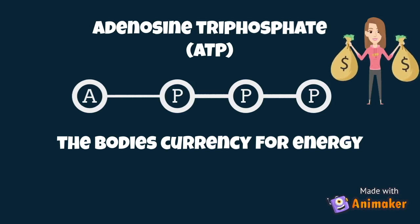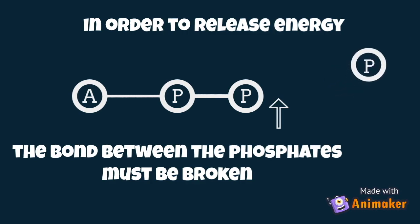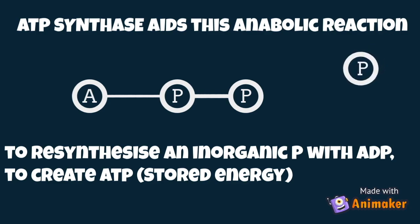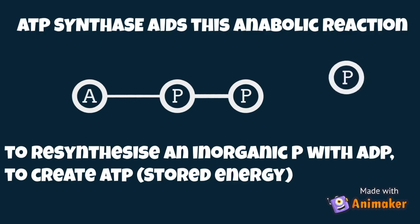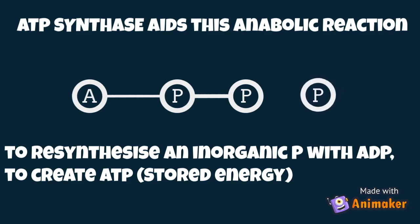To release energy, the bond between the phosphates must be broken by an enzyme called ATPase, producing ADP plus an inorganic phosphate and releasing energy. We're then left with ADP, which must be resynthesized back into ATP. ATP synthase — 'synth' meaning to build — aids this anabolic reaction, allowing an inorganic phosphate to reconnect with ADP to create ATP and stored energy once more. This cycle keeps repeating: ATP breaks down into ADP plus inorganic phosphate plus energy, then ATP synthase resynthesizes ATP.